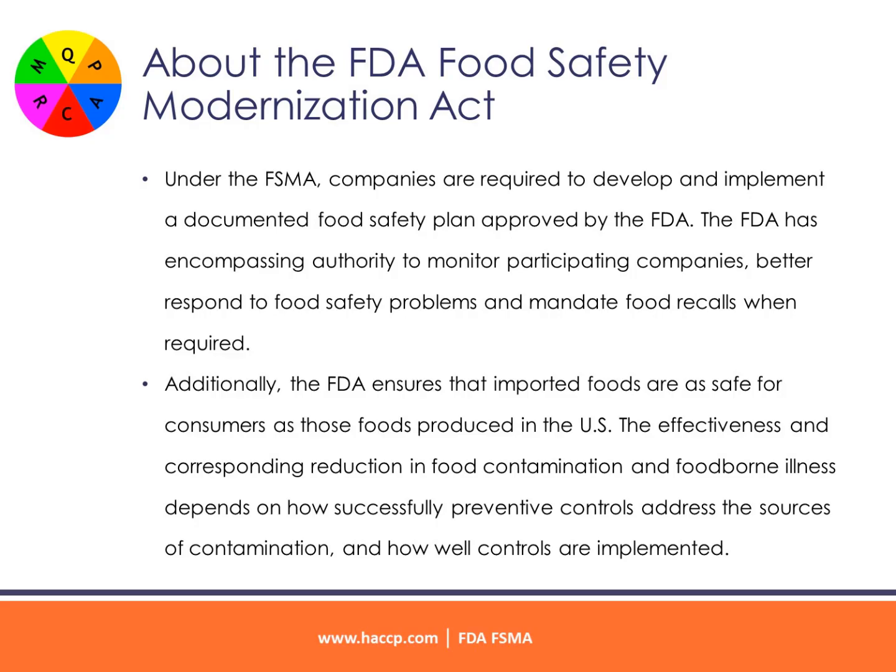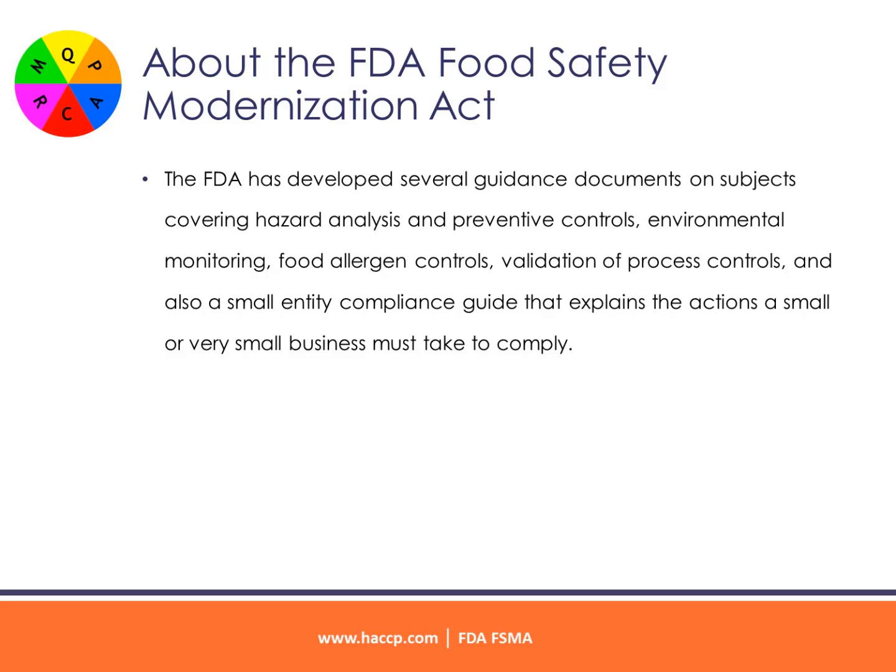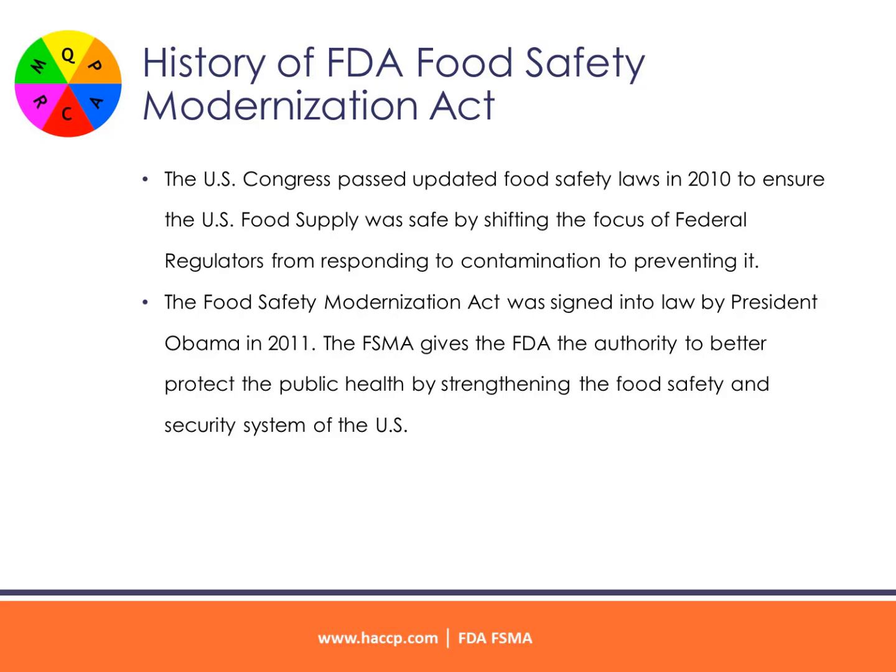The effectiveness and corresponding reduction in food contamination and foodborne illness depends on how successfully preventive controls address the sources of contamination and how well controls are implemented. The FDA has developed several guidance documents on subjects covering hazard analysis and preventive controls, environmental monitoring, food allergen controls, validation of process controls, and also a small entity compliance guide that explains the actions a small or very small business must take to comply.